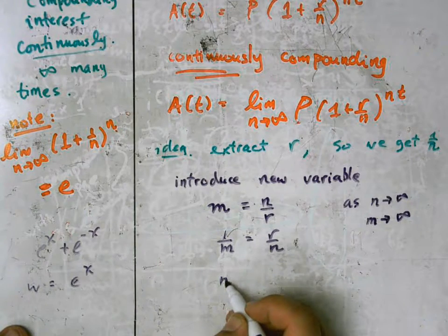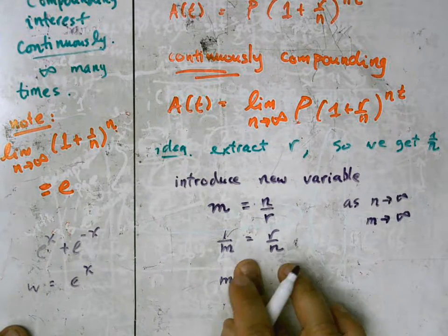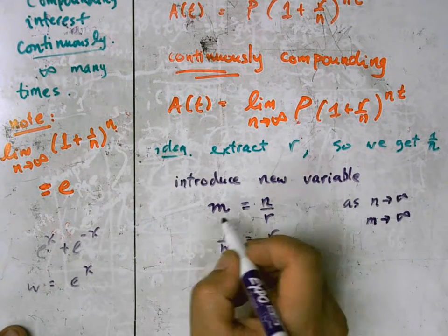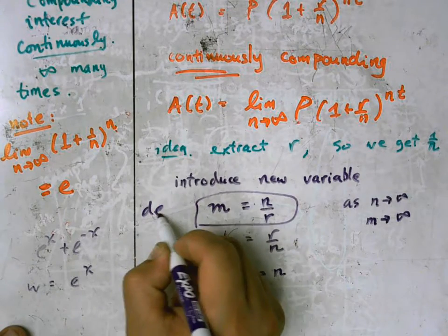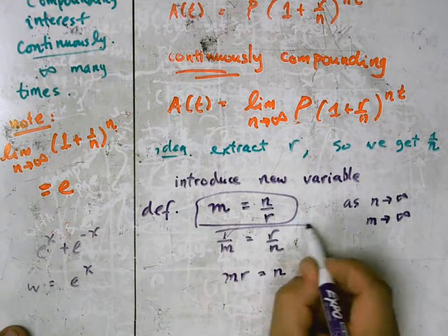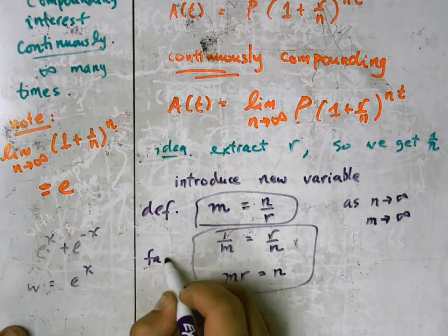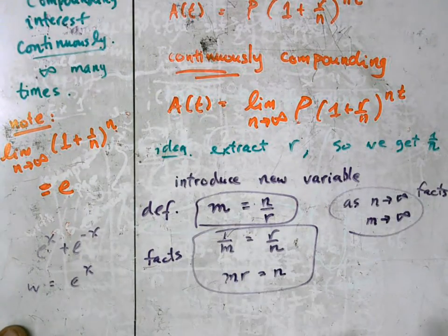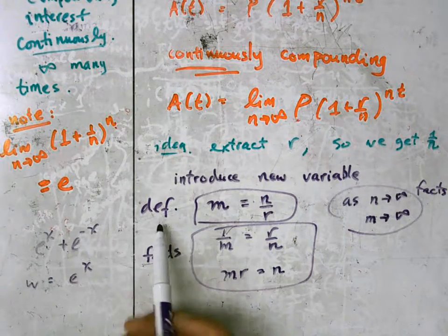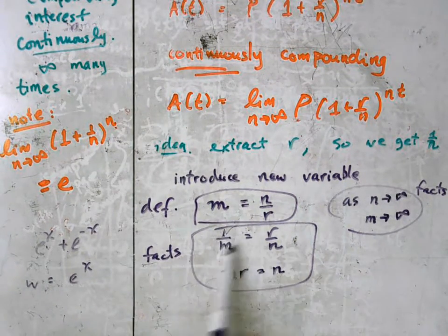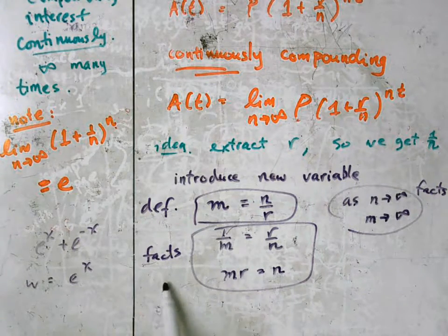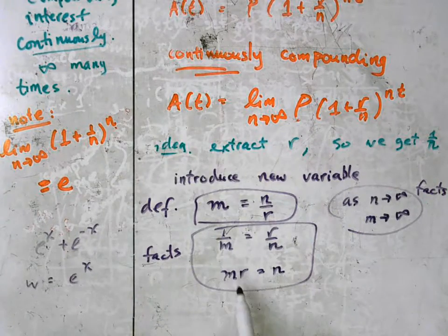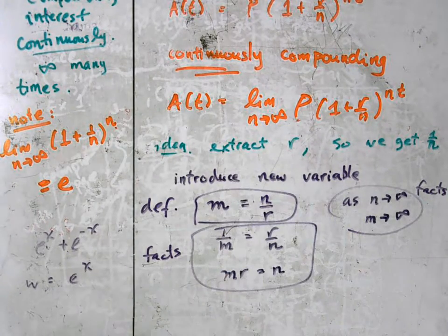And then we can say also one more thing, mr is equal to n. So this is the definition of m. These are facts that are derived from the definition. So we're allowed to make up the definition and then we can take the definition and just rework it algebraically to get some of the facts. And now we're going to apply these ideas to this expression here.